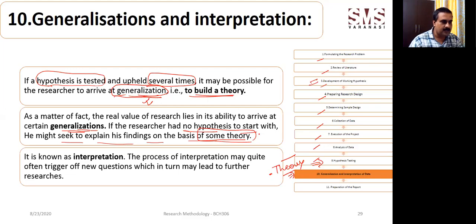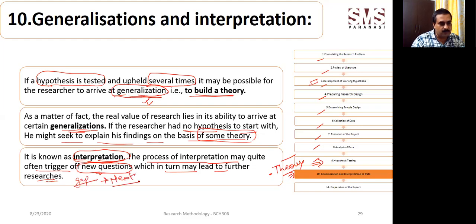This is known as interpretation. The process of interpretation may quite often trigger new questions which in turn lead to further research. While doing this interpretation, new questions may arise and these can be considered as gaps for next research. This particular step is also going to tell you what kind of gap is expected in a particular research and on the basis of that gap, how the next research is to be carried out.